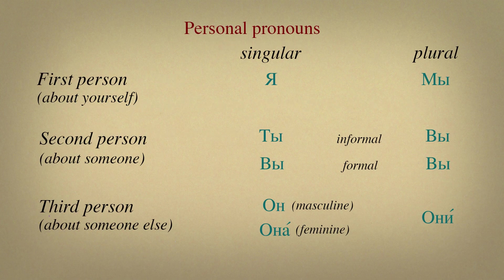Now let's review all pronouns we have learned in this lesson. Personal pronouns are either first person, second person, or third person. They have singular — единственное число — or plural form — множественное число. A singular form of first person — я. A plural form — мы. There are informal and formal situations when talking to someone. In informal situation: singular — ты, plural — вы. In formal situation: singular — вы, plural — вы. Third person is gender-specific: он for masculine, она for feminine. A plural form is они.